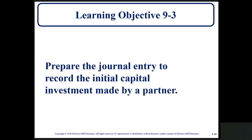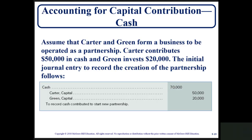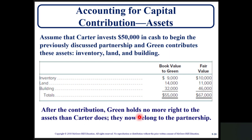Learning objective 9-3: prepare the journal entry to record the initial capital investment made by a partner. Assume that Carter and Green form a business operated as a partnership. Carter contributes $50,000 in cash and Green invests $20,000. The initial journal entry records a debit to cash for $70,000, with Carter's capital account credited for $50,000 and Green's capital account credited for $20,000, to record cash contributions to start a new partnership.